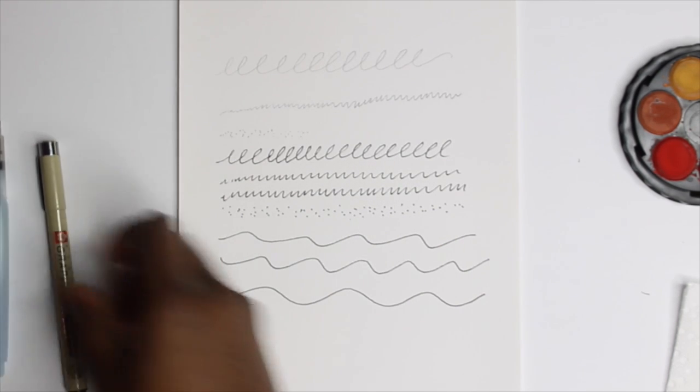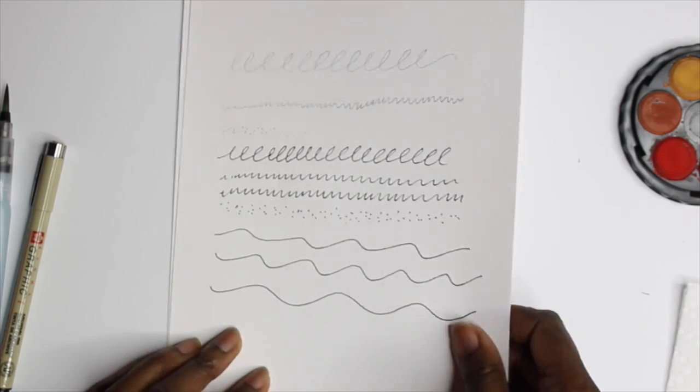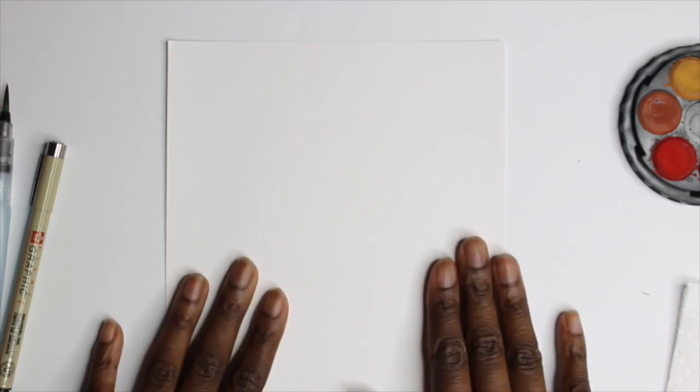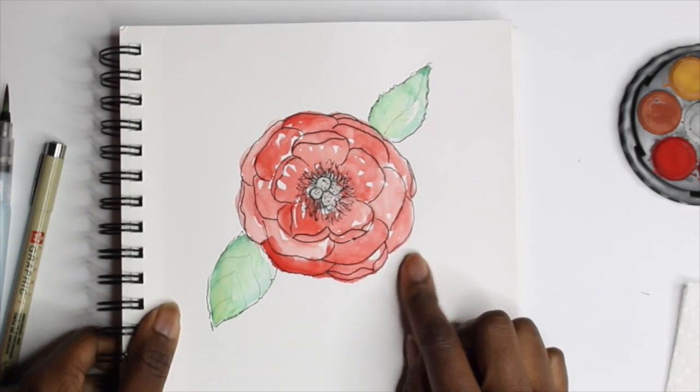So now we're finished our warm-up. We're going to be heading into starting the painting. We're just going to put that paper aside. And using our watercolor paper, we're going to start the outline so we can create this flower.